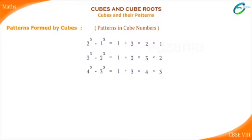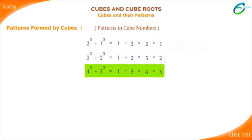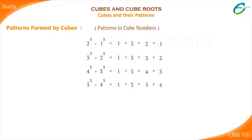Now observe the following pattern: the difference between two consecutive cube numbers is equal to one added to thrice the product of the numbers. Using this pattern, 5³ minus 4³ equals one added to thrice the product of 5 and 4. Similarly, 7³ minus 6³ equals one added to thrice the product of 7 and 6.